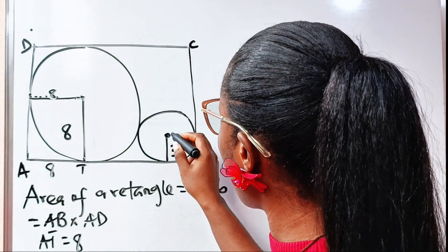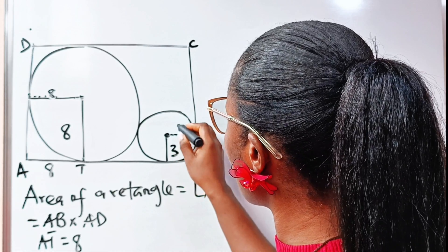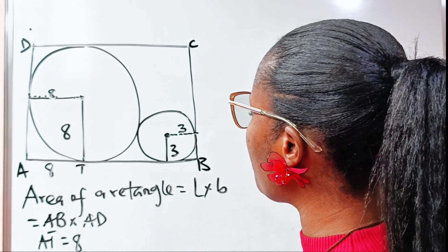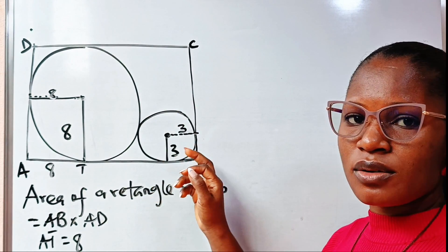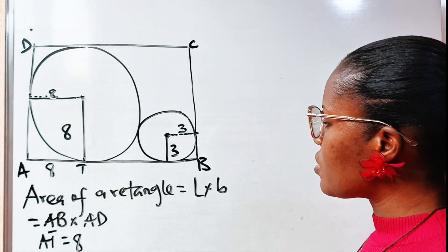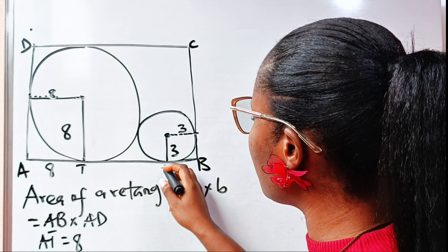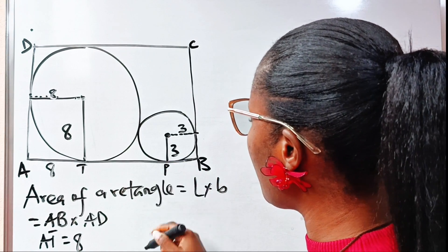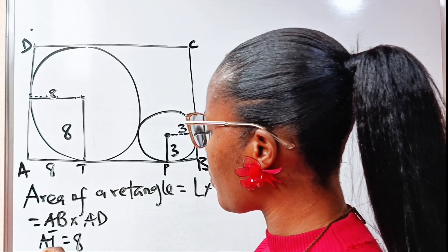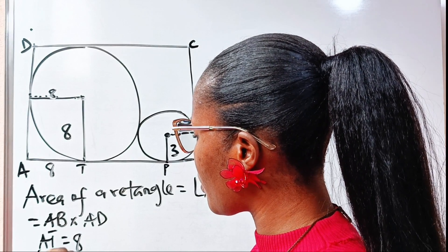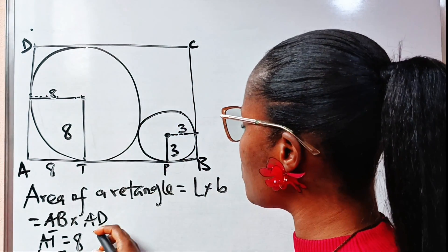Similarly, the distance from the smaller circle's center to the circumference is three, which is the radius of the smaller circle. So if I call this point P, then PB is also equal to three.